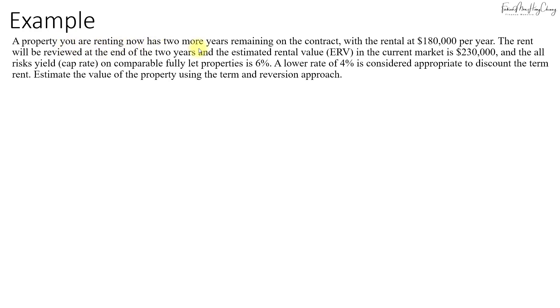A property you are renting now has two more years remaining on the contract, with the rental currently at $180,000 per year. The rent will be reviewed at the end of the two years, and the estimated rental value in the current market is $230,000 starting from year 3 onwards.